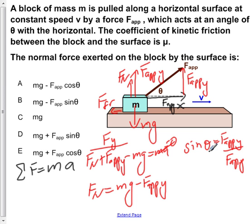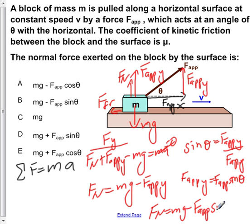Now, if we solve for the y component of the applied force, we would get that it's equal to the applied force times the sine of theta. This would give us that fn is equal to mg minus the applied force times sine of theta.